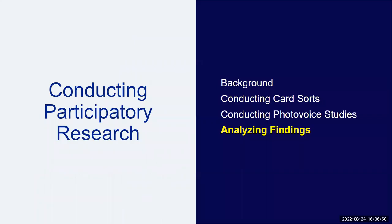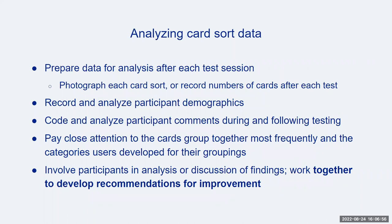Now let's talk about analyzing findings gathered from these two methods. First, for analyzing findings from card sorts. If you opted to use physical cards, photograph each sort or simply record each participant's grouping. Write down the labels each participant gives for each grouping and the numbers of the cards included under that category label. Be sure to record the labels on any additional cards that participants created. You may also want to photograph the finished card sort for reference later. You'll want to do this after every test session because you'll then reshuffle the cards and add new blank cards for the next session.